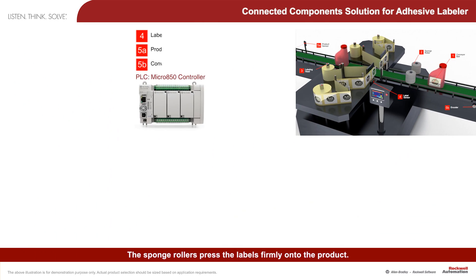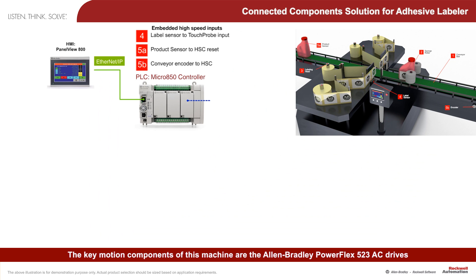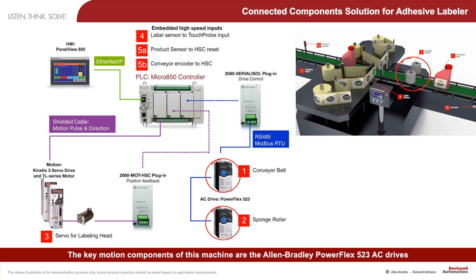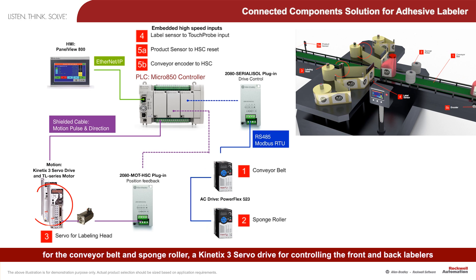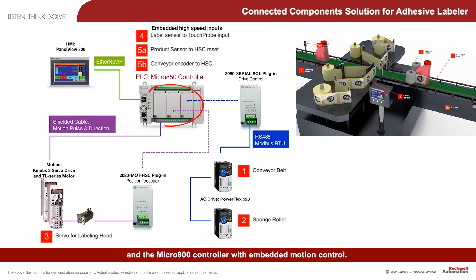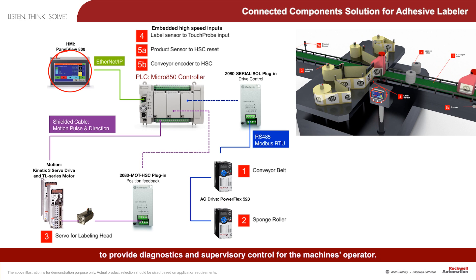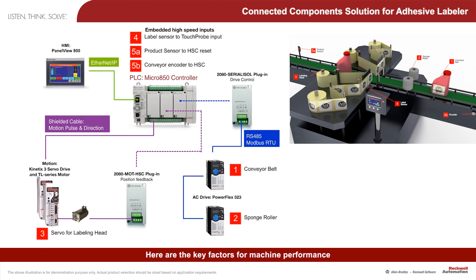The sponge rollers press the labels firmly onto the product. The key motion components of this machine are the Allen-Bradley PowerFlex 523 AC drives for the conveyor belt and sponge roller, a Kinetix 3 servo drive for controlling the front and back labelers, and the Micro 800 controller with embedded motion control. The HMI PanelView 800 is connected to the Micro 800 controller over EtherNet/IP to provide diagnostics and supervisory control for the machine's operator.